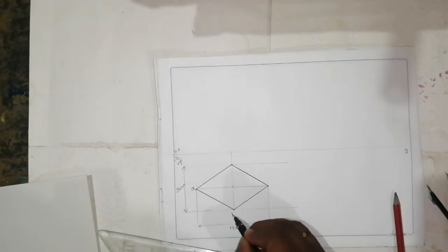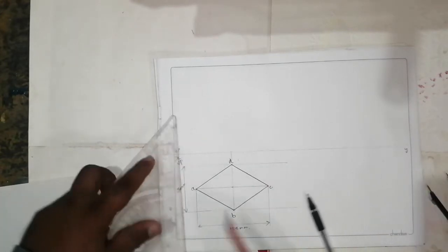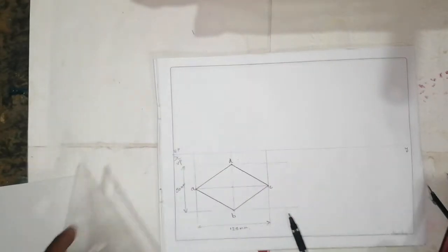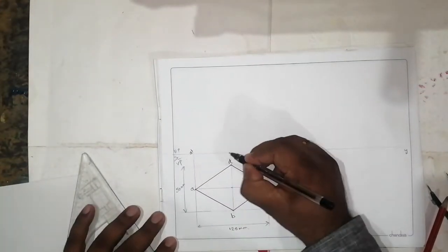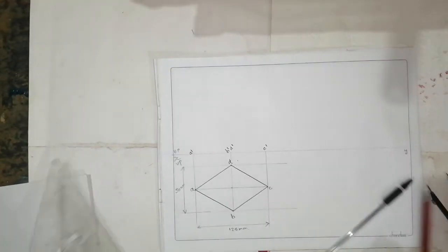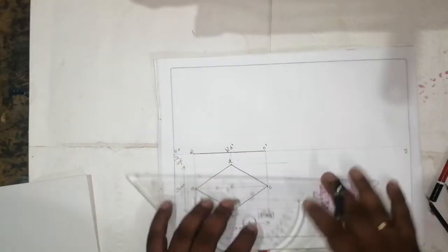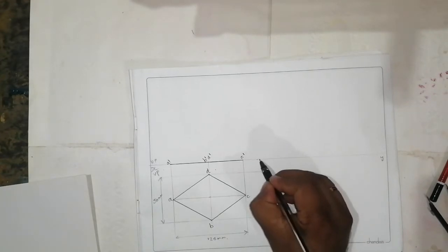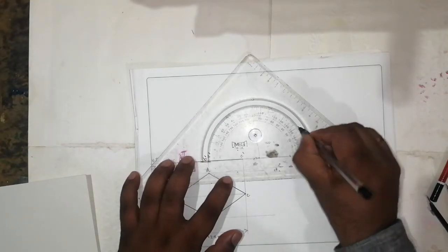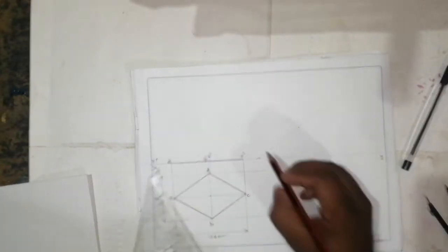Label the points A, B, C, and D. Then using the projection lines, it's going to be A dash, B dash, D dash, and C dash. This should be on the HP. Make it dark with pencil. After that, keep one point and take 30 degrees.